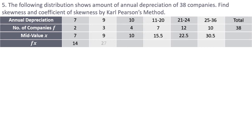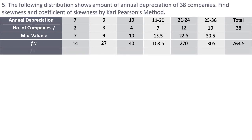Next I multiply the frequency with these mid values to calculate the mean. 2×7=14, 3×9=27, 4×10=40 (wait, that gives 40), then 7×15.5=108.5 (shown as approx), 12×22.5=270, and 10×30.5=305. Adding all these values gives 764.5. Next I need to calculate fx² — this is a very standard procedure — which will help in calculation of standard deviation.